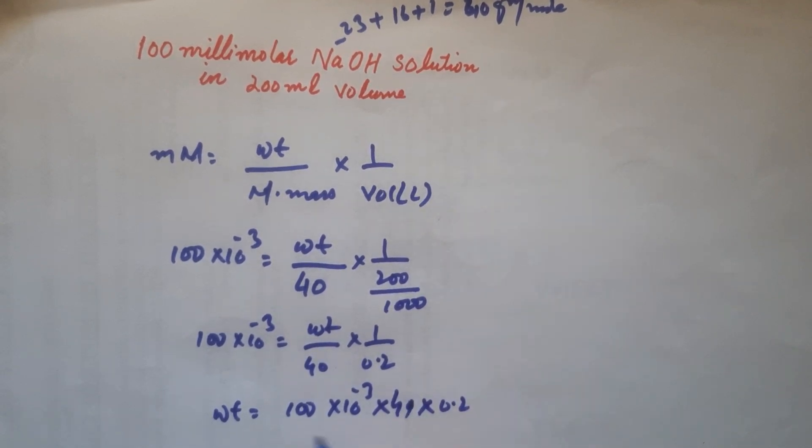So these zeros would be cancelled out, and 4 multiplied with 0.2 equals 0.8.